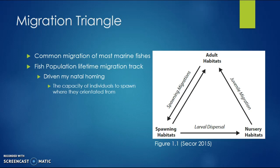This is the migration triangle. Common migration is the most common type of migration in marine fish. This is the fish population lifetime migration track, and it is driven by natal homing, which is the capacity for individuals to spawn from where they originate.